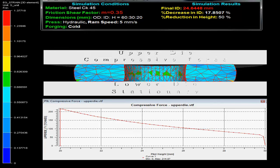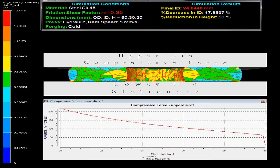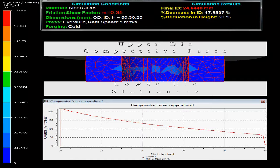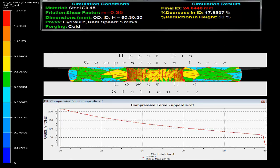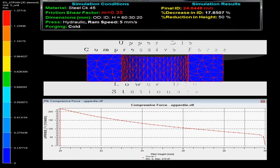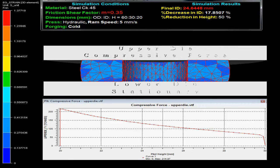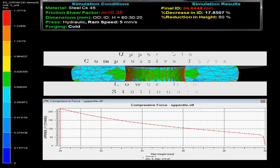On the top left corner in the video one can observe the simulation conditions. The specimen material is steel with friction shear factor M as 0.35 and initial outer diameter to inner diameter to height ratio is 60 to 30 to 20.